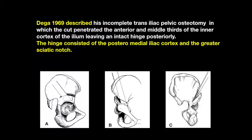Dega in 1969 described his incomplete transiliac pelvic osteotomy, in which the cut penetrated the anterior and middle thirds of the inner cortex of the ilium, leaving an intact hinge posteriorly. This hinge consisted of the posterior medial iliac cortex and the greater sciatic notch.